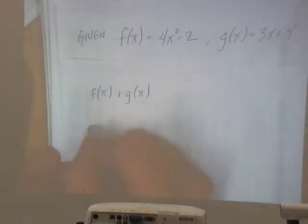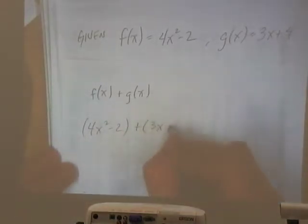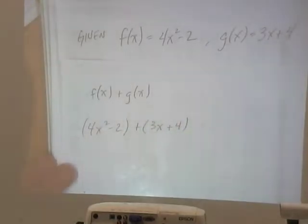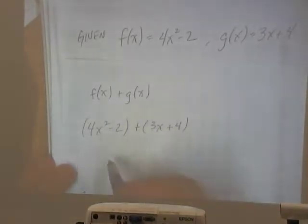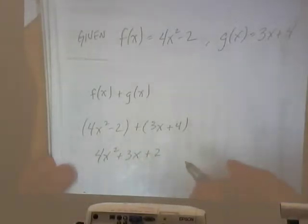All right, so we'll just combine them. So 4x squared minus 2 and we're going to add that to 3x plus 4. So if we combine the like terms, we've got 4x squared plus 3x plus 2. So that is B.